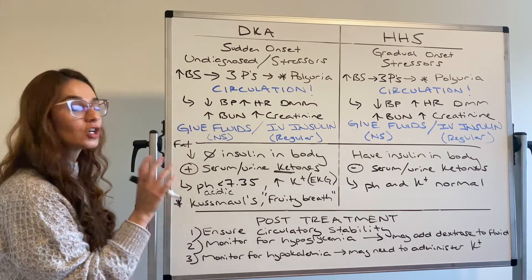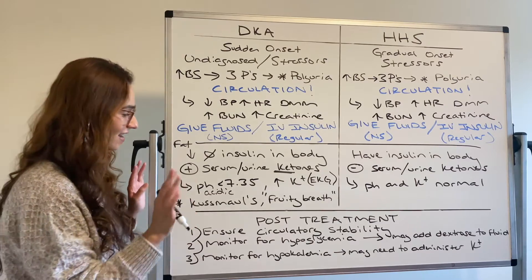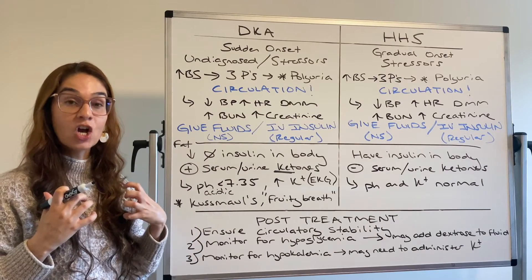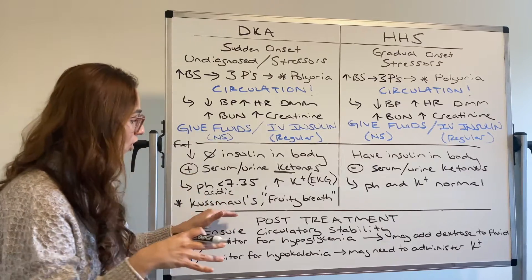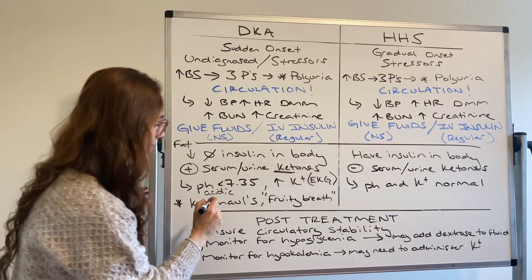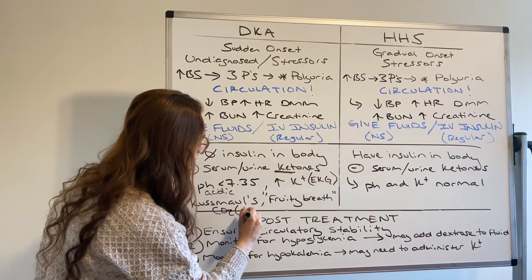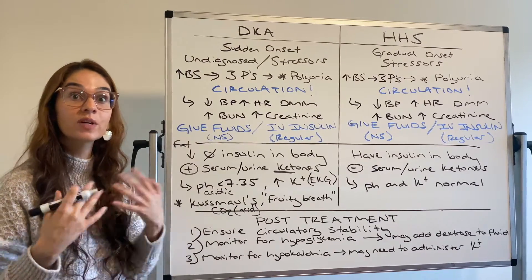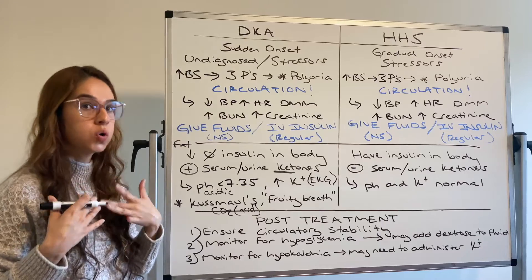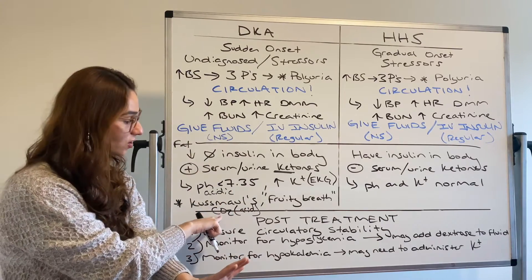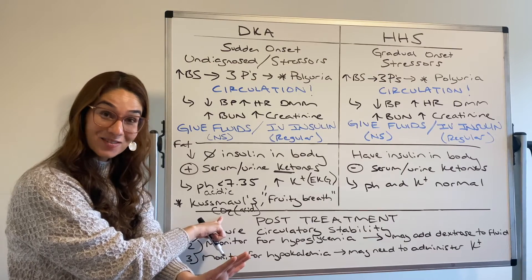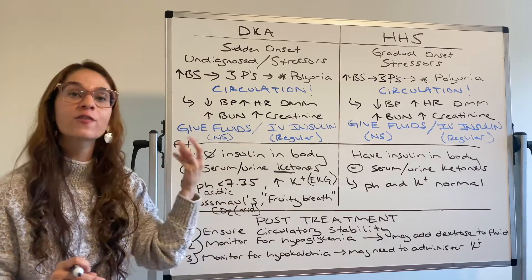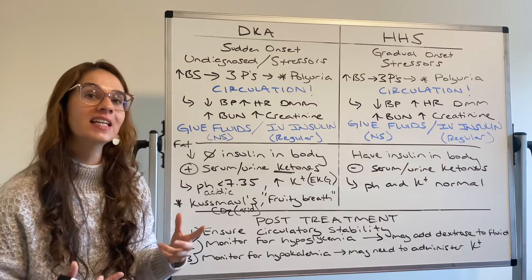And something else: Kussmaul's respirations. When we are in an acidic state, I have too much acid — my body is going to cope and try to get acid off. Kussmaul's is actually a coping mechanism. Think about CO2: CO2 is an acid. So I'm in an acidic state, my pH is less than 7.35, I need to get rid of acid. I'm going to start to blow off my CO2 — carbon dioxide, which is an acid — it's a coping mechanism. Kussmaul's is a coping mechanism. And traditionally in DKA they have that fruity acetone breath because of ketone development.